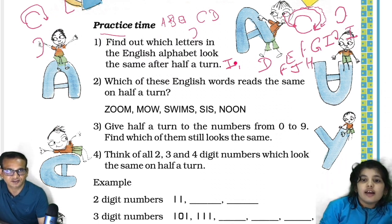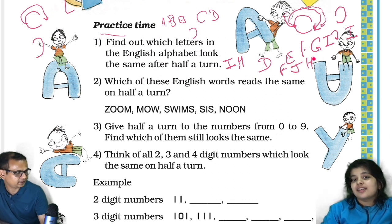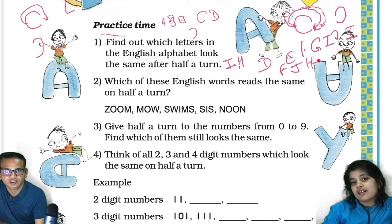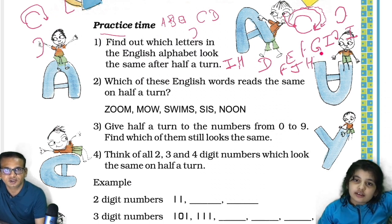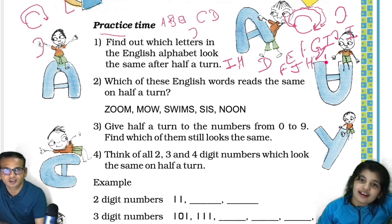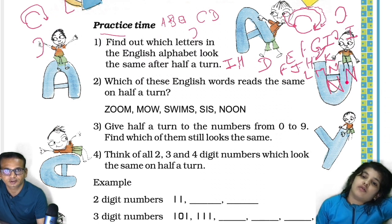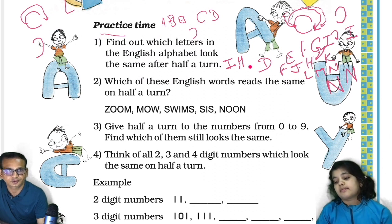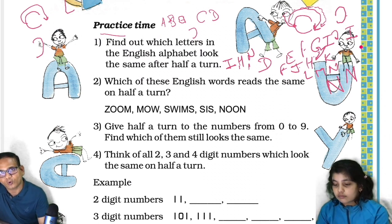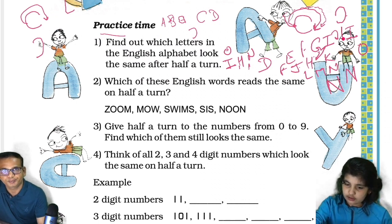H — H will also be in that category. H looks the same after half a turn. So going through the alphabet: E, F, G, H, I, J — K also won't be there, L, M — no. N — yes! N will be like this; this side comes this side and that side comes this side. So N is also in that category. O — O is also there. P — not there, Q — not there, R — not there.